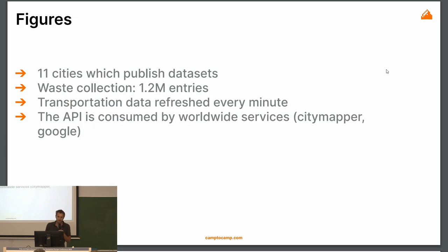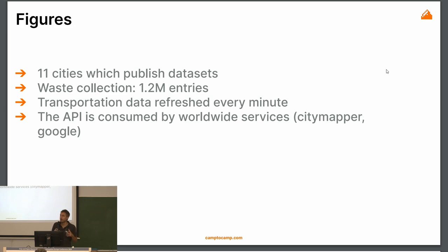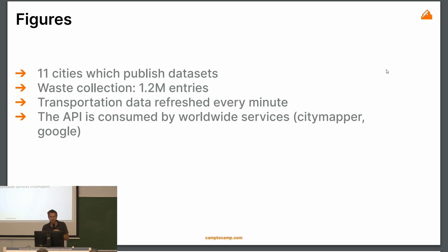Metropole Européenne de Lille covers 11 cities that publish data and datasets. They have very large datasets like rainfall every quarter at different locations, and waste collection with more than a million entries. The service is performant and stable. For instance, all transportation data is refreshed every minute through GeoOrchestra — a provider sends bus positions and issues every minute, passing through the GeoOrchestra API, watchable through the DataHub and consumed by other applications. These APIs are consumed by worldwide services like Google for transportation data. For them it's a very big move.